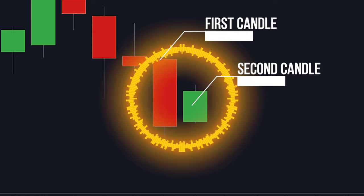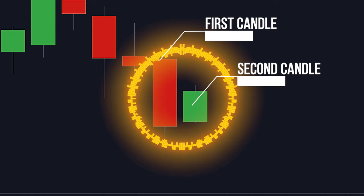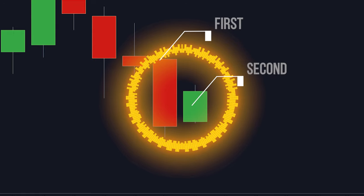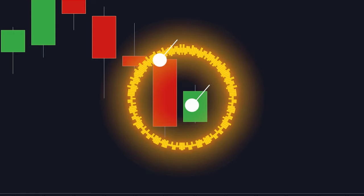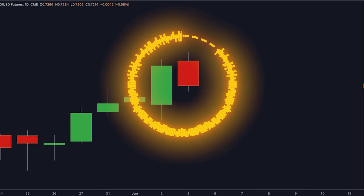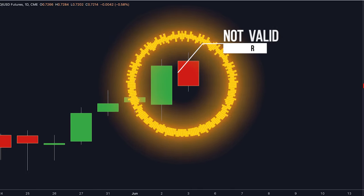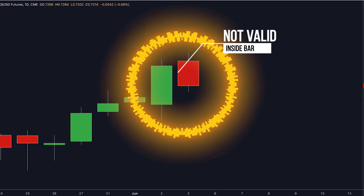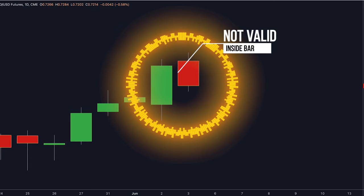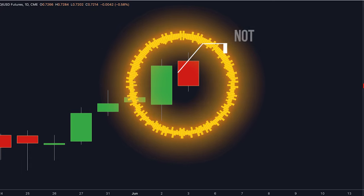Many traders get confused and misinterpret an invalid inside bar for a valid one, and this mistake could be costly. In the chart example, the body of the second candle does fit within the range of the previous candle; however, the high and low do not. So it is not a valid inside bar.